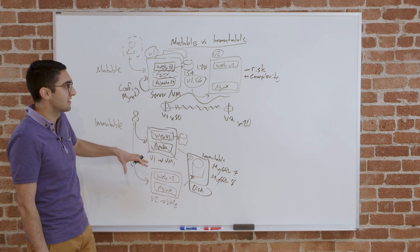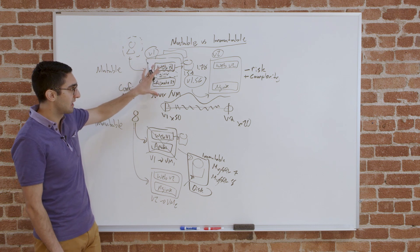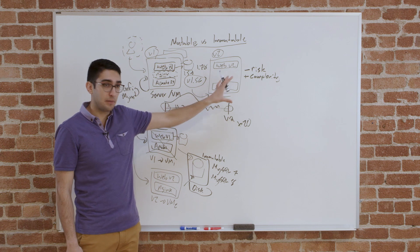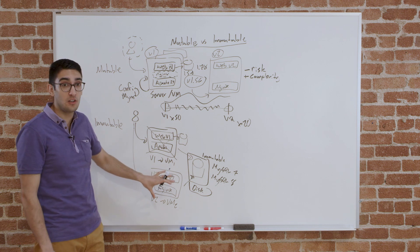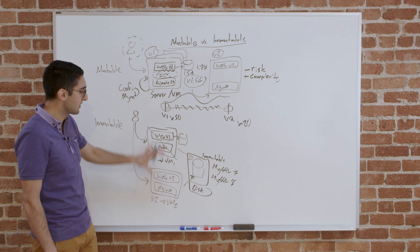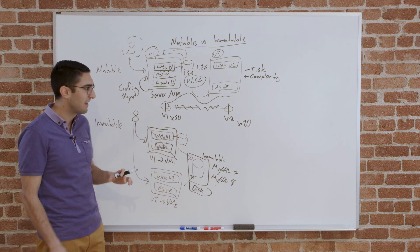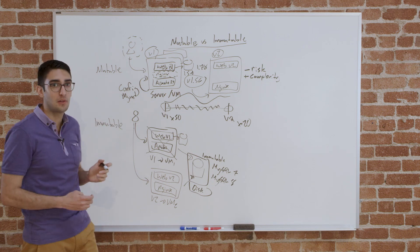But this is fundamentally the distinction: do we take existing infrastructure and try and upgrade in place, or do we take existing infrastructure, create new infrastructure running at the new versions, and destroy the existing thing in place? And that's the core distinction between mutable and immutable infrastructure.